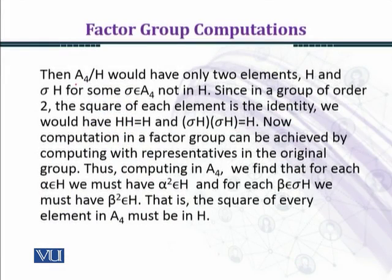Then A4 over H would have only two elements, H and sigma H, for some sigma belonging to A4 not in H. Here you can see that we have the previous module in the example discussed. That technique we have applied here. A4 has a total of 12 elements. A4 is a subgroup. S4 is the symmetric group with n equal to 4. And A4 is the set of all even permutations in the symmetric group S4.